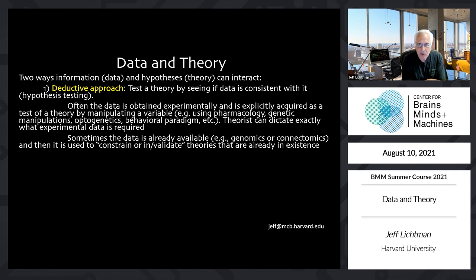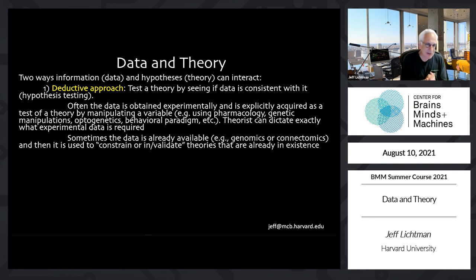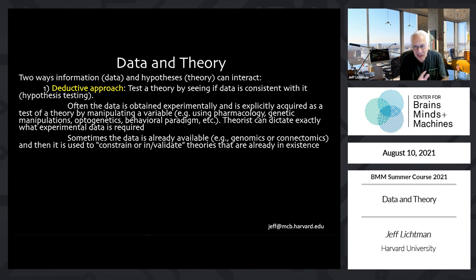In principle, the deductive approach can rule out hypotheses you've been harboring a long time by showing you some piece of data is incompatible with it. In practice, that rarely happens, because those are considered negative results. So many modern scientists use deductive work to constrain or modify their hypothesis, but not necessarily to abandon it, because they're in love with their hypothesis — if you have been living with a particular idea a long time, you begin to believe it's true, and all evidence to the contrary, you'll still believe it, or you'll modify your hypothesis but won't get rid of it. So you can already tell that I have some issues with the deductive approach.